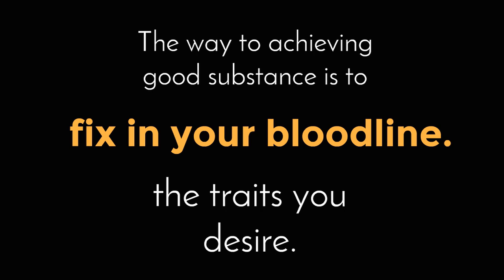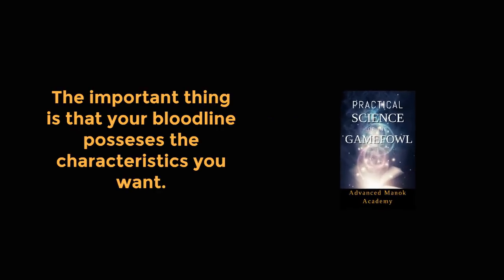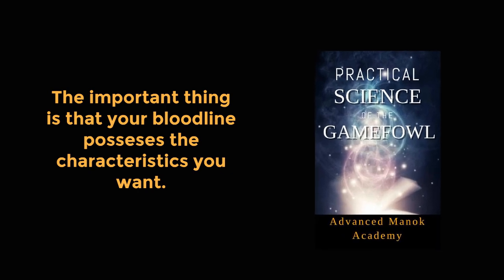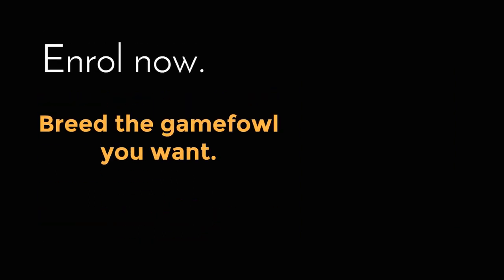So, the way to achieving good substance is to purify or fix in your bloodline the traits you desire. You can do this by repeatedly and continuously mating individuals that possess the traits you desire. It is not important whether these individuals are related or not. Indeed, it is better if they are not related, so the offspring are not inbred. The important thing is that the offspring possess the traits you want in your bloodline. This topic is discussed thoroughly in the course Practical Science of the Gamefowl. What are you waiting for? Enroll now and breed the gamefowl you want.